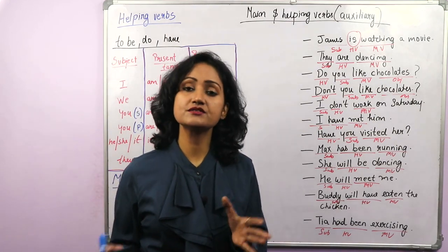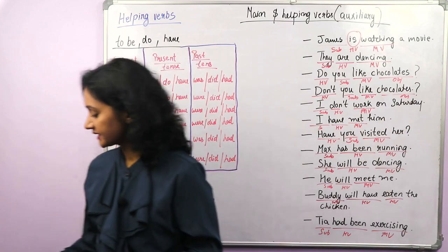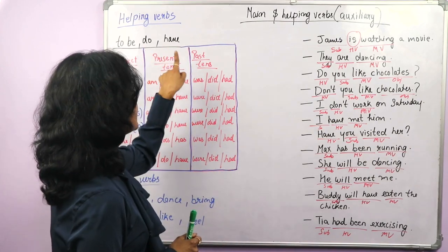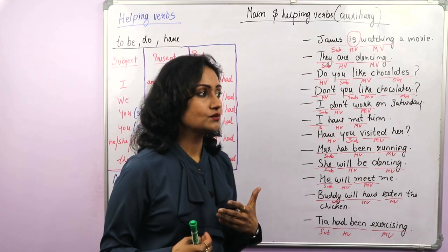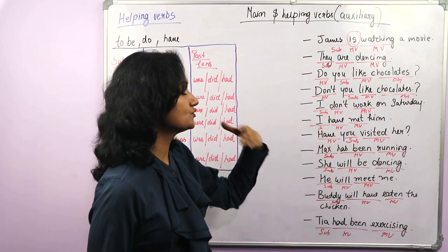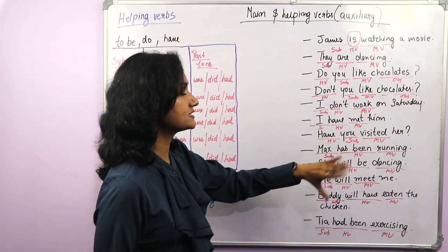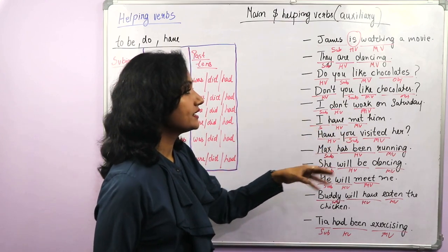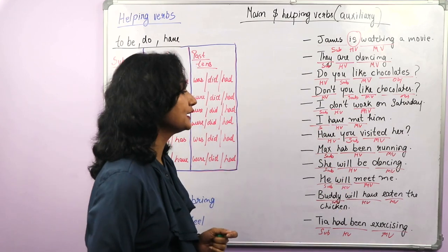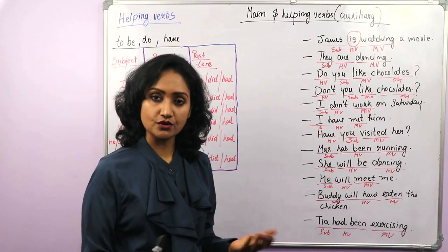You can make out easily which is the main verb and which are the helping verbs in the sentence. As I told you earlier, do and have can work as a main verb or as helping verbs. We have seen how we can use do and have as helping verbs — while making negative sentences, interrogative sentences, or in perfect or perfect continuous sentences.